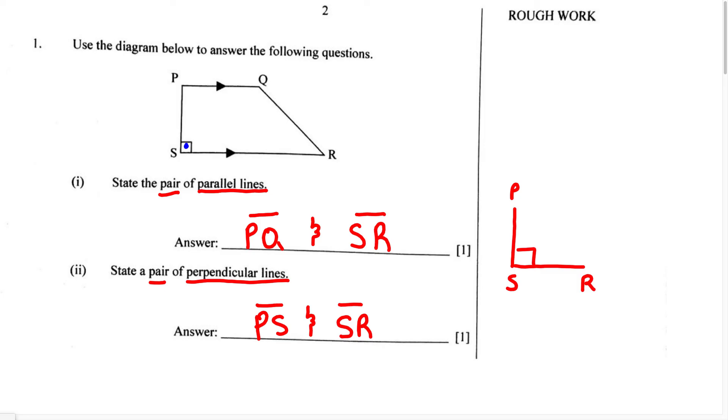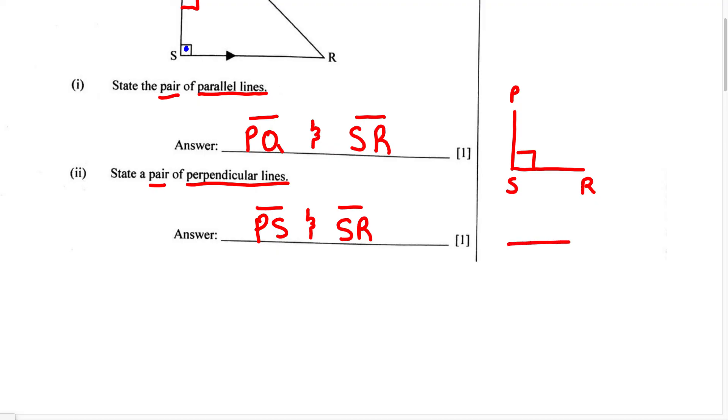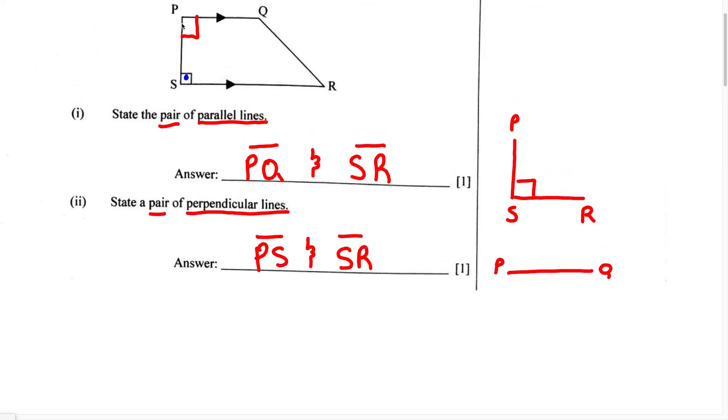Now there is also another pair of perpendicular lines in this polygon. And because this polygon is a right angle trapezoid, if this is 90 degrees, then this angle right here is also going to be 90 degrees. Therefore, another pair of perpendicular lines would have been line PQ and line PS. So if you wrote PS and SR or if you decided to write PQ and PS, you're still going to get the answer correct. This is how we state the pair of parallel lines and perpendicular lines for a right angle trapezoid.